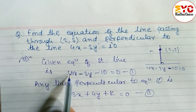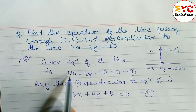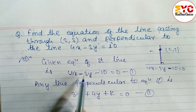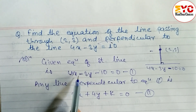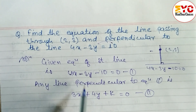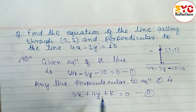To summarize: interchange the coefficients — in place of 4 write 3, in place of 3 write 4 — and change the sign: minus becomes plus, plus becomes minus. The last term is simply written as plus k.